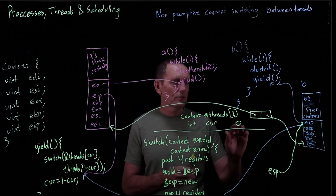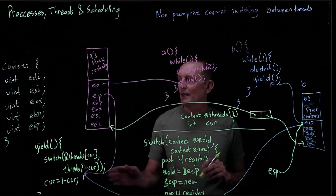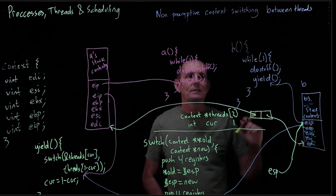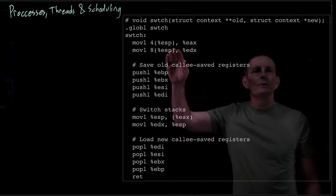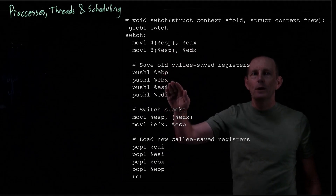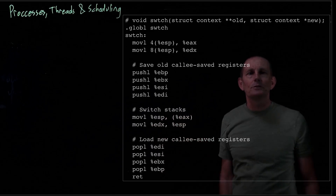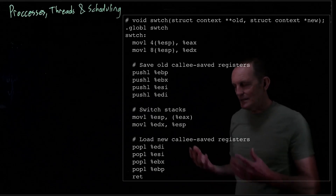As we return from switch, we update current — current now becomes 1, representing the fact that we are now running on threads at 1. When we return from yield, we return from that EIP and go back into B's loop, going about its business until it calls yield again. So yield gives us this back and forth. The actual code for switch takes the two parameters, moves them into temporary registers — EAX holds old, EDX holds new — pushes the four registers, saves the current stack pointer into star-old, moves new into the current stack pointer, pops the other registers, and returns. Very similar to our pseudocode.